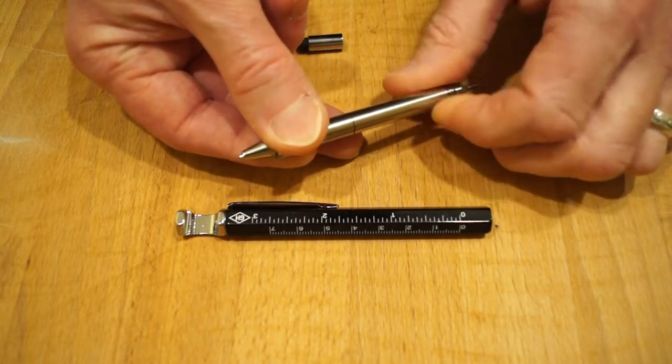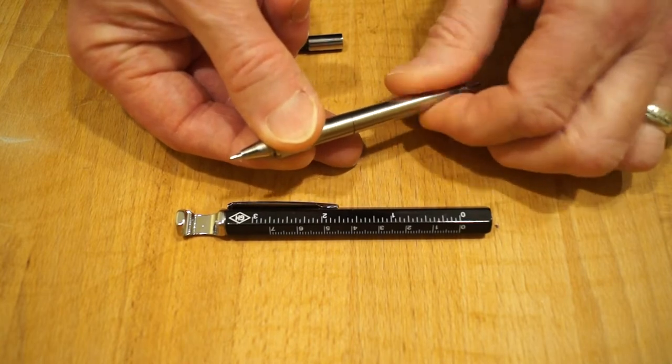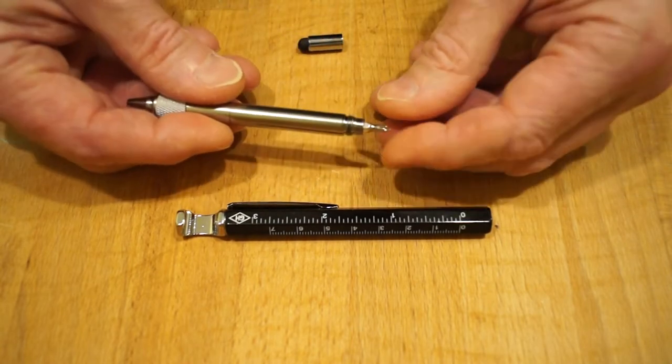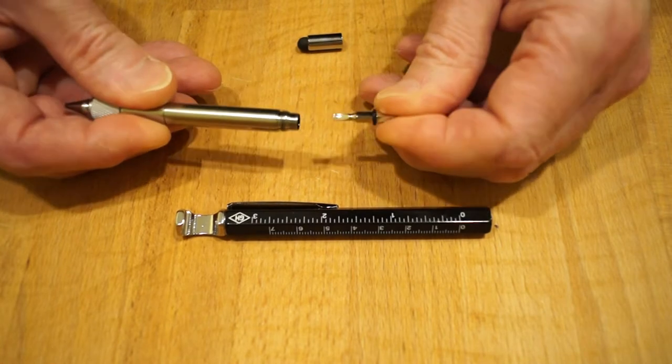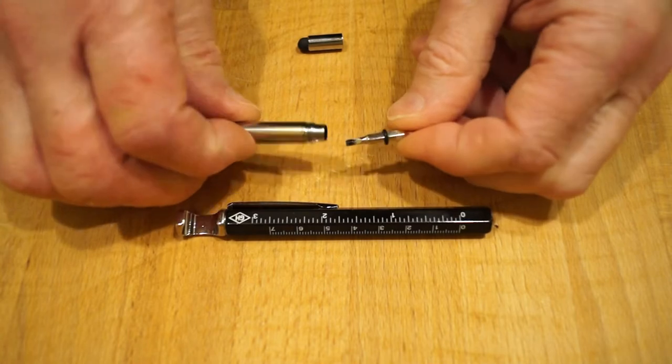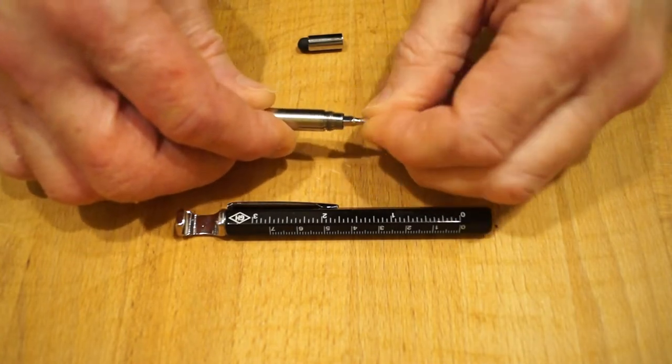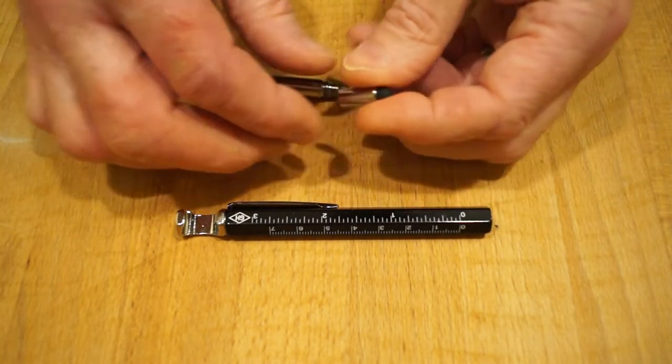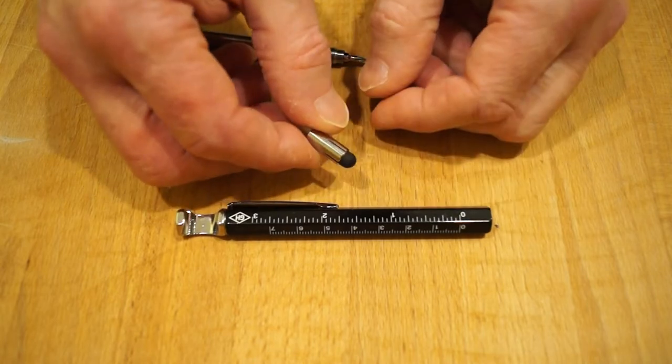There's a ballpoint pen in there. Give it a twist to access the tip as you can see it coming in and out there. And then the other end we have hopefully yes, a double-ended little screwdriver here. The screwdriver bit just pops back in there and then we have a touchscreen stylus bit here.